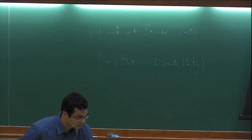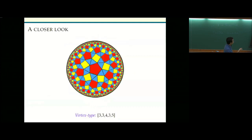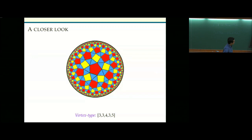The whole topic for today is uniform tilings of the hyperbolic plane. Here's a picture — this is a uniform tiling shown in the Poincaré disk model. All of these are regular hyperbolic polygons, meaning all the sides are the same length. It is uniform, which means that at every vertex, if you look around it and look at the polygons appearing, you see the same set of polygons.